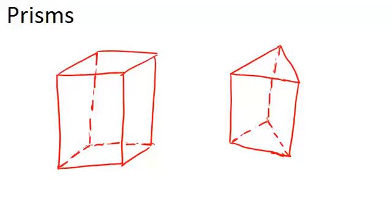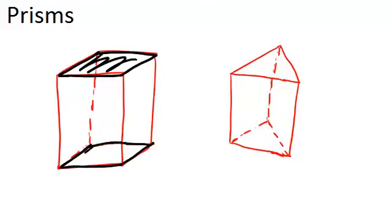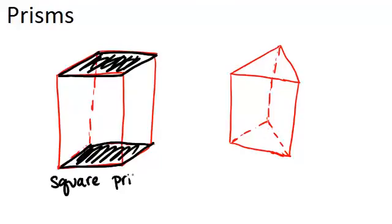So pictured here, we have two different prisms, and they're each prisms because they have these two parallel bases. The one on the left, these two bases on the top and on the bottom are parallel to each other. And notice that these are each squares, so this is called a square prism. Or you could call it a rectangular prism.